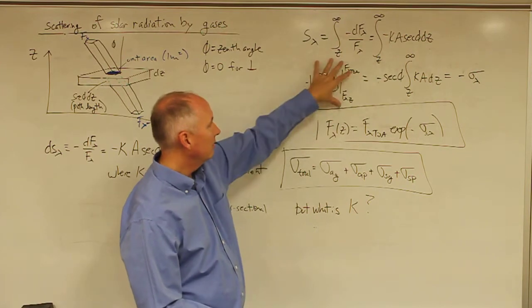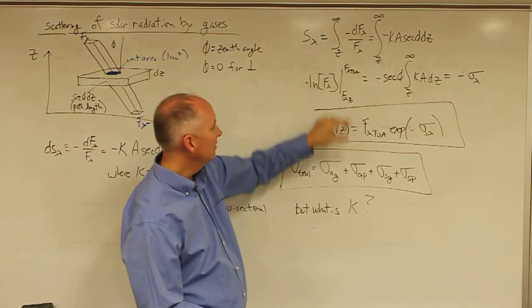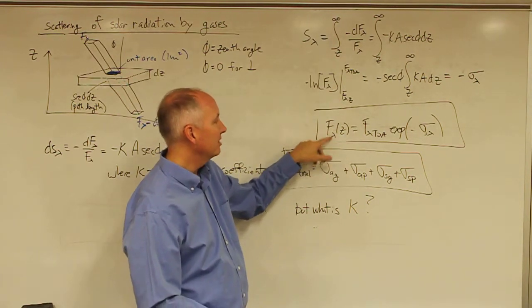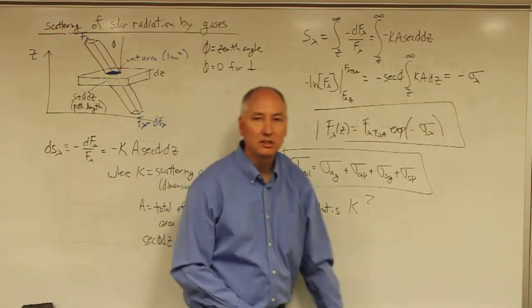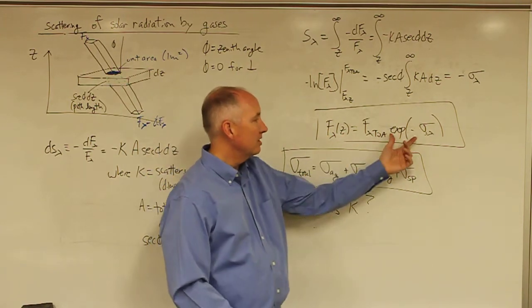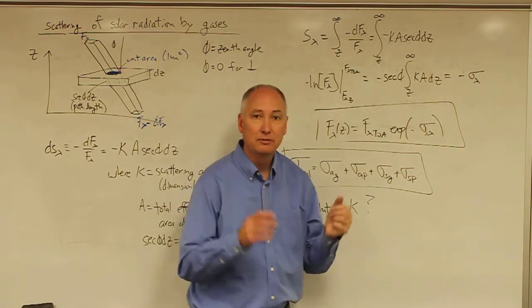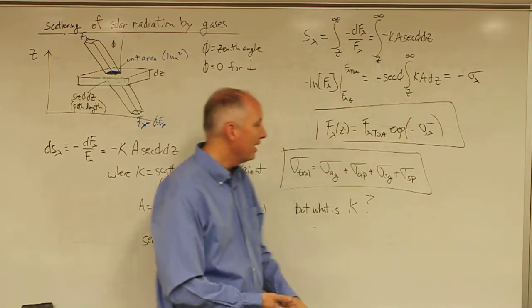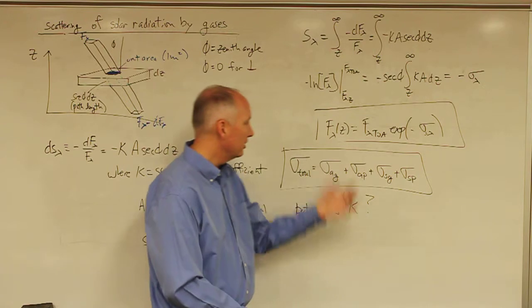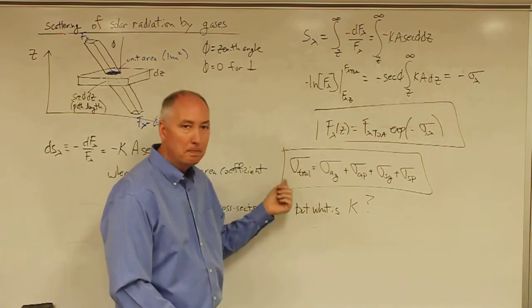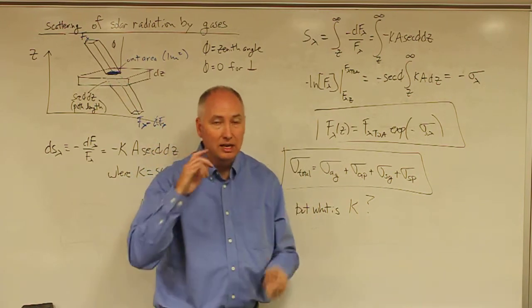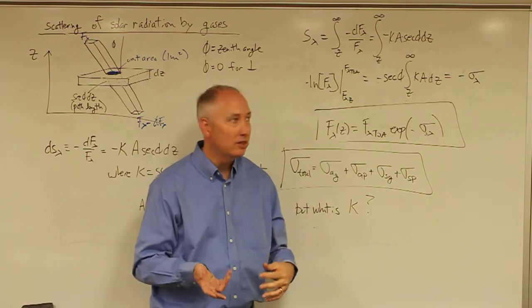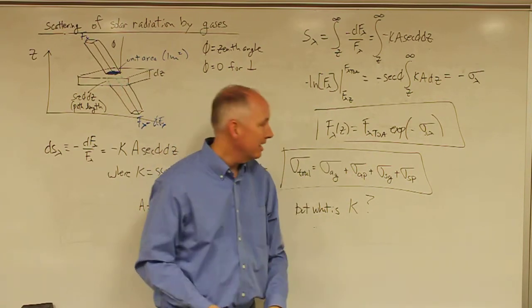And then we can evaluate this in a role like we did last time, and you'll get that the irradiance at some height is equal to the irradiance at the top of the atmosphere times the exponent minus the optical depth due to scattering. And that raises an interesting point. This, of course, is Beer's Law. But we had an optical depth due to absorption by gases. Now we have an optical depth due to scattering by gases.